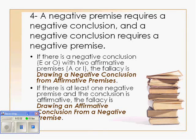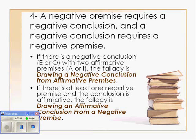Otherwise, it's the fallacy of drawing a negative conclusion from affirmative premises. If there is at least one negative premise and the conclusion is affirmative, the fallacy will be drawing an affirmative conclusion from a negative premise. So again, if the conclusion is affirmative, there cannot be a negative premise — or it's a violation of rule number 4, the fallacy of drawing an affirmative conclusion from a negative premise.